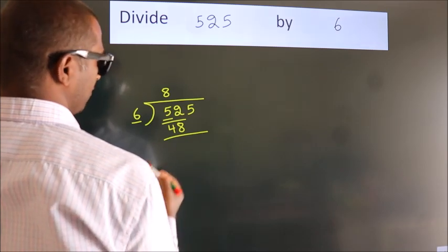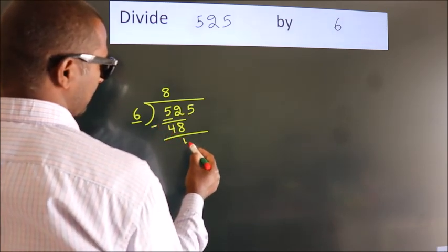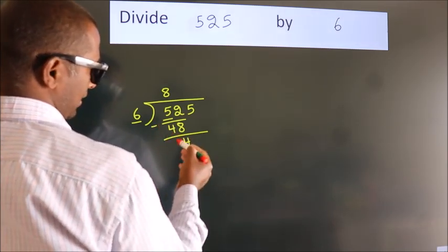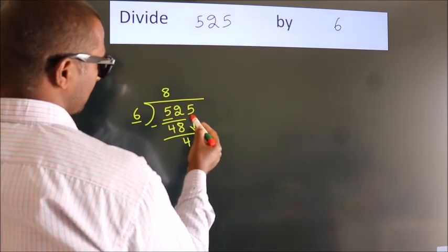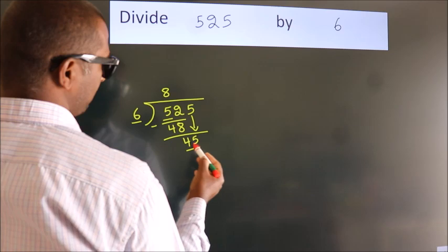Now, we subtract and get 4. After this, bring down the next number, 5, to get 45.